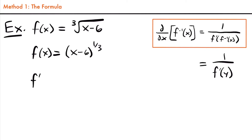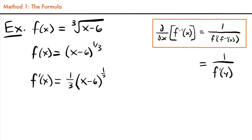Now we can take the derivative. f prime of x will require using the chain rule because we have a composite function where the inside function is x minus six and the outside function is that quantity to the one-third power. We'll start by taking the derivative of the outside function: one-third times x minus six to the power of one-third minus one. We multiply that exponent down and subtract one from the exponent, then multiply by the derivative of the inside function, which is just one.